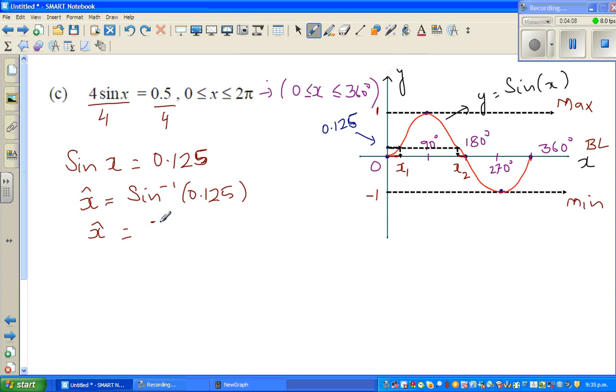This is your reference angle: 7.2 degrees. Your reference angle is the same as x1 because that's in the first quadrant. Your reference angle is always in the first quadrant. The first quadrant is up to 90, between 90 and 180 is the second quadrant, between 180 and 270 is the third, and between 270 and 360 is the fourth quadrant.